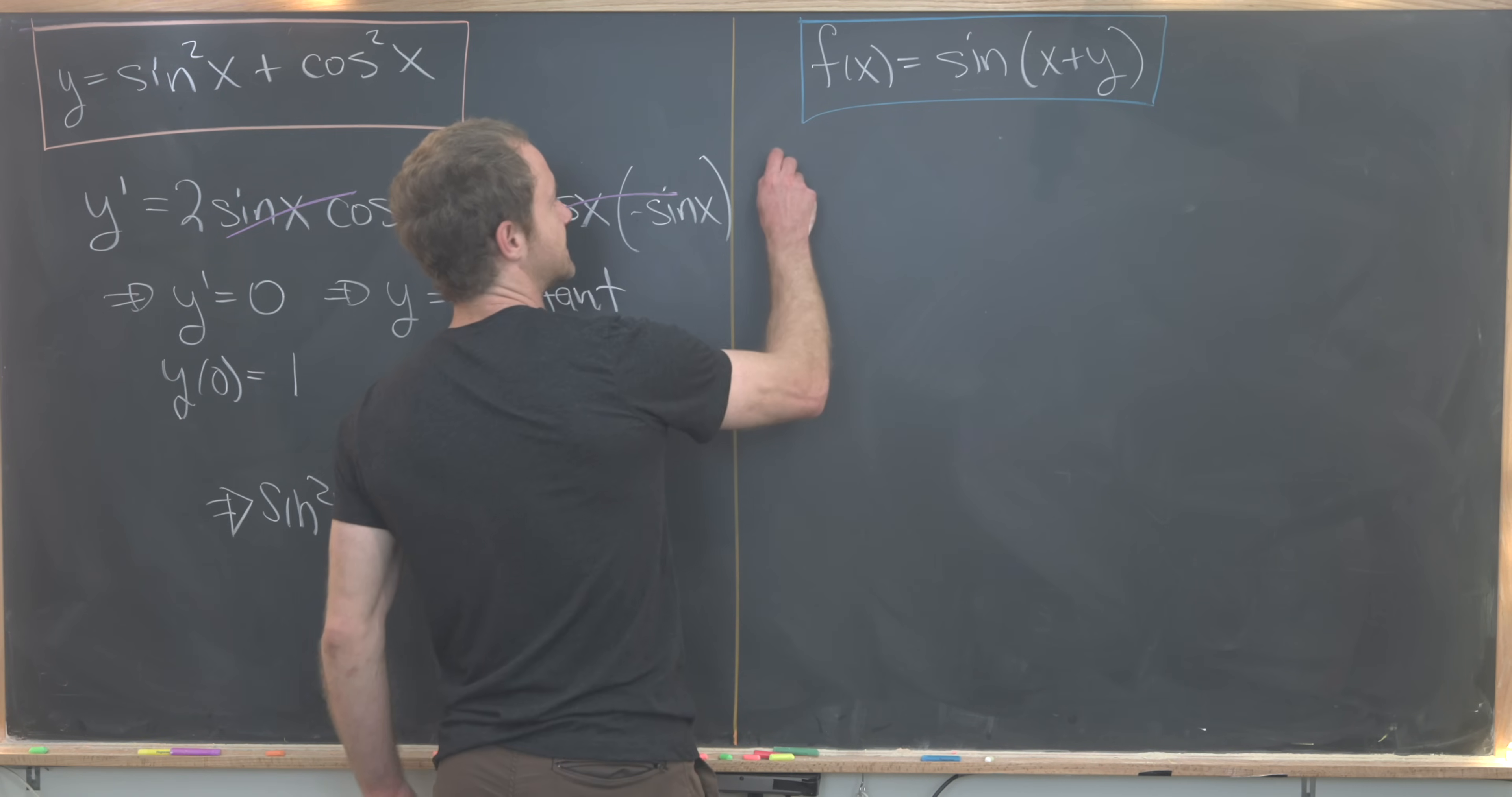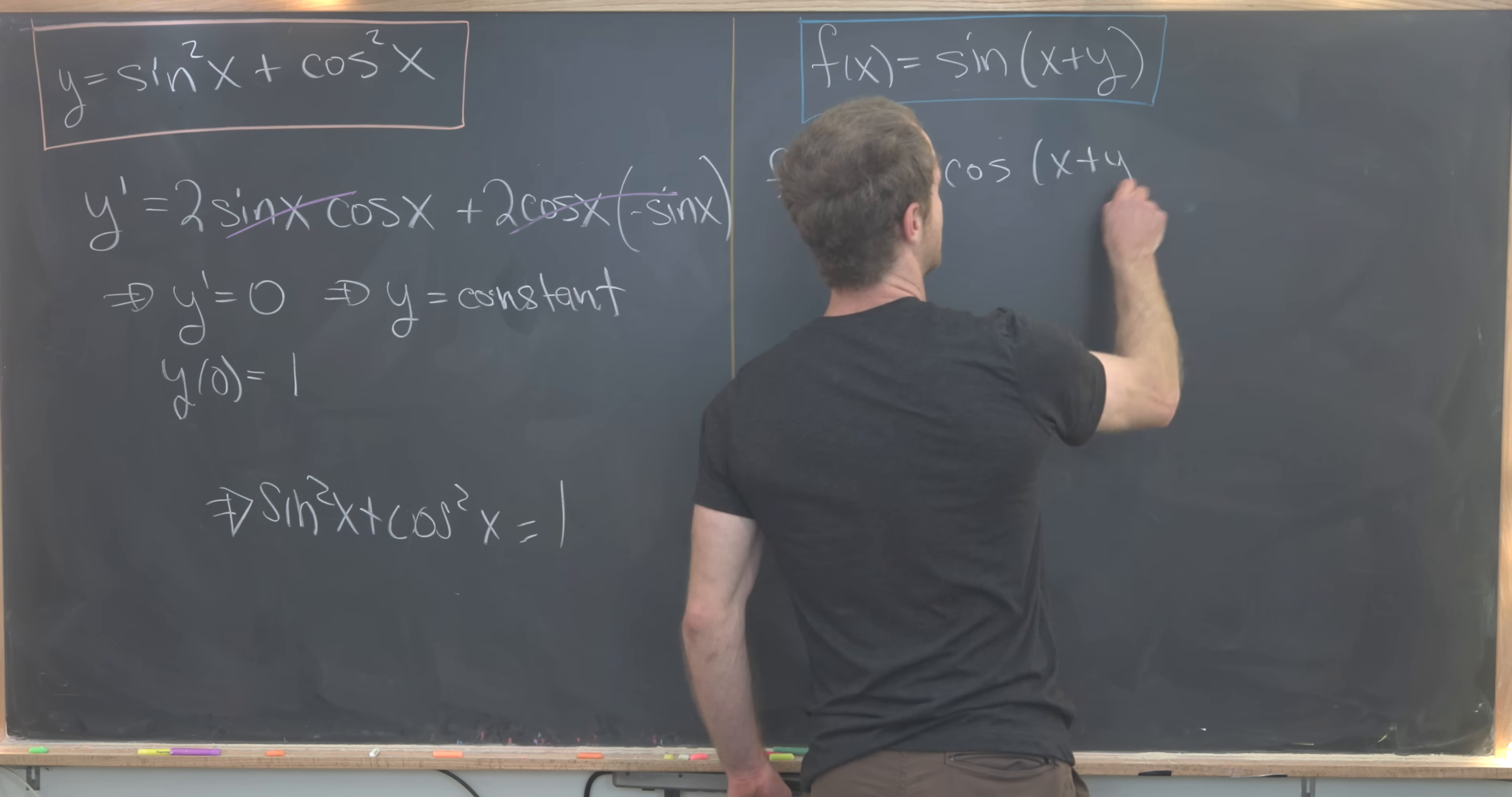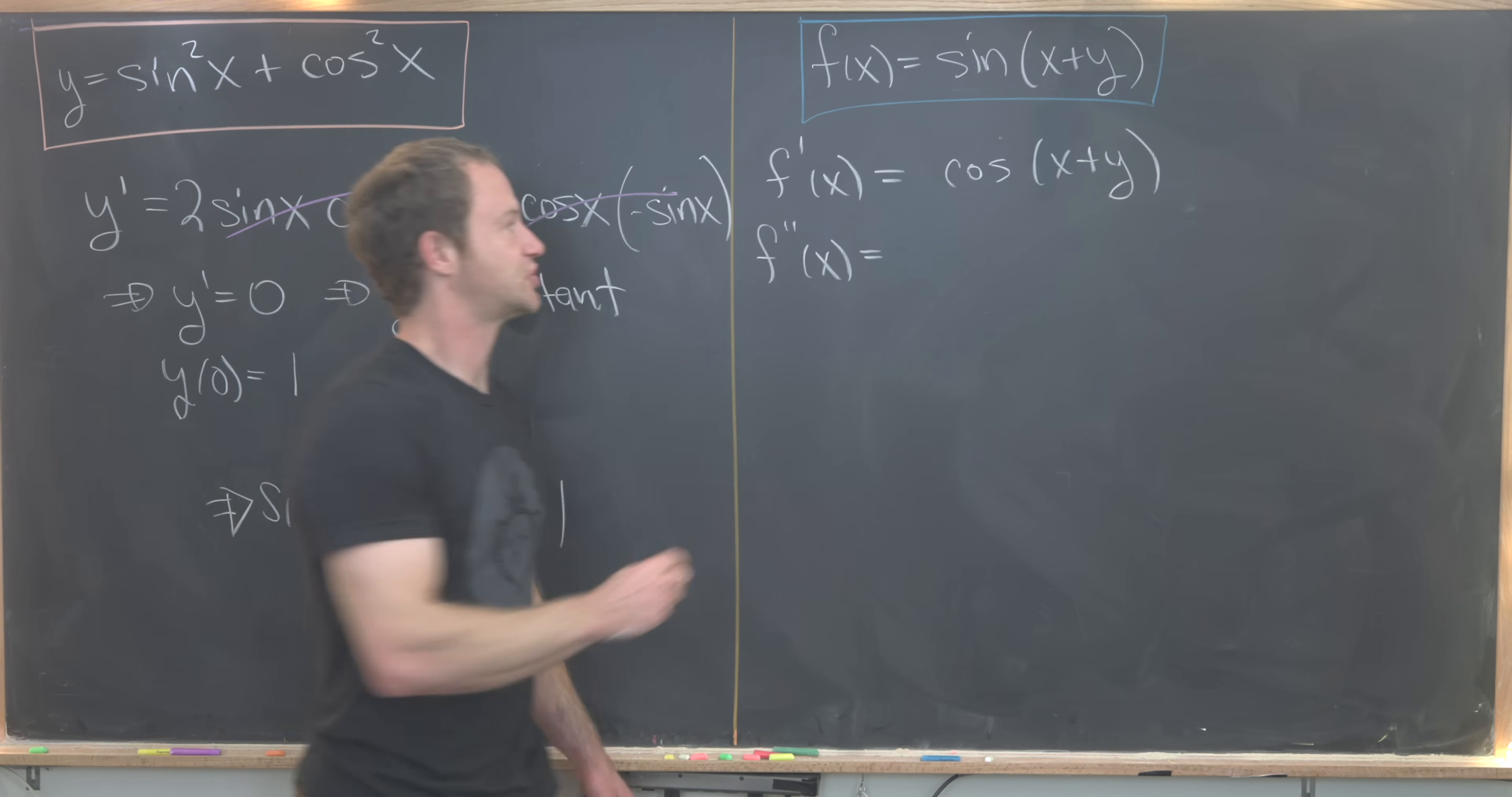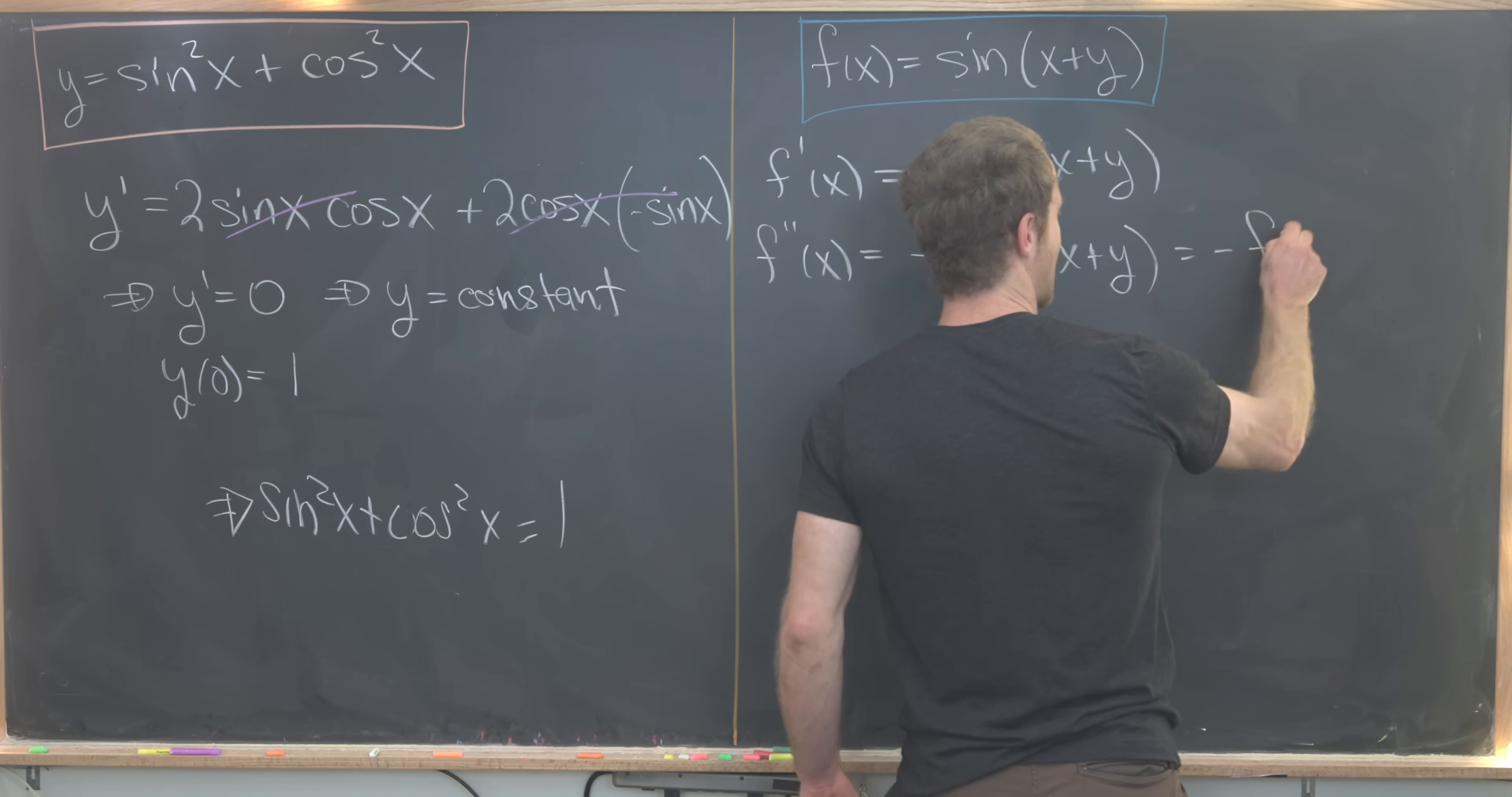First, if I take the derivative f'(x), I'll get cos(x + y). Nominally we also have the derivative with respect to x of (x + y), but y is a constant so that doesn't contribute anything. Next we'll see that f''(x) equals -sin(x + y), using the same sort of logic. But notice that's equal to -f(x).